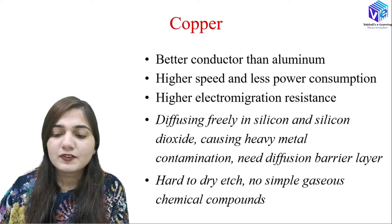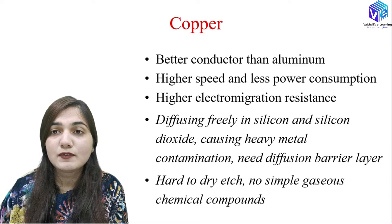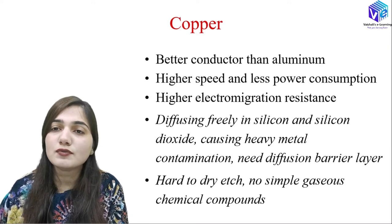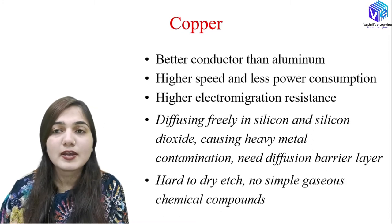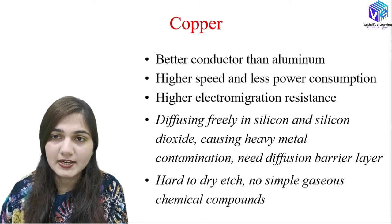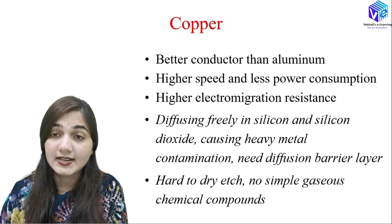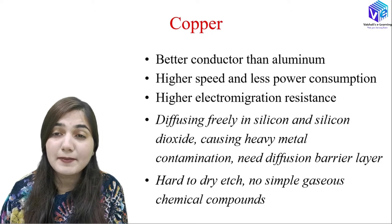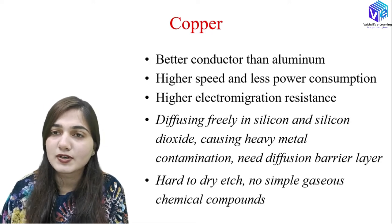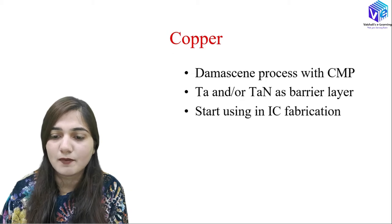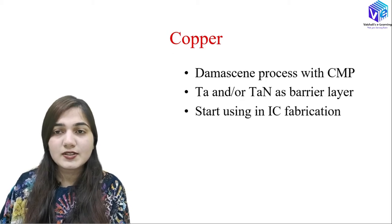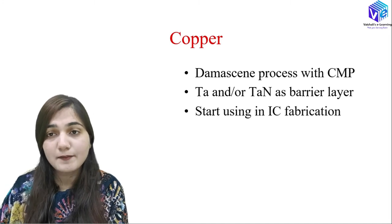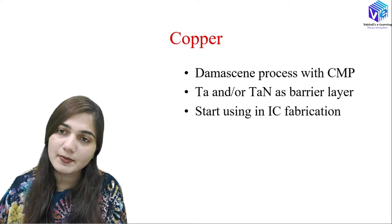However, there are some disadvantages as well. Copper diffuses freely into silicon and silicon dioxide, causing metal contamination. To address this, we use a barrier layer of tantalum or tantalum nitride. The second disadvantage is that copper is hard to dry etch — there is no simple gaseous chemical compound available. So we use the damascene process with CMP (Chemical Mechanical Polishing), which we will cover in detail in upcoming videos.